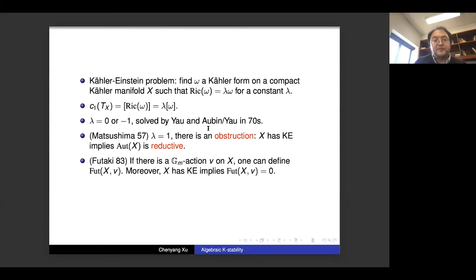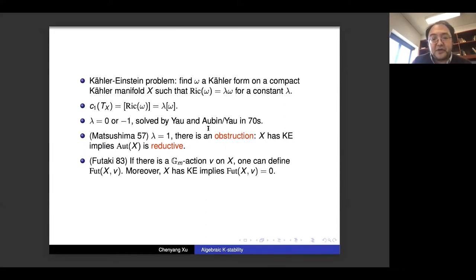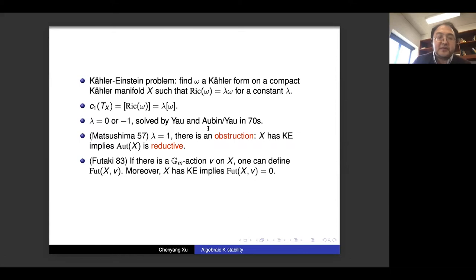Historically, people try to find canonical metrics, and one kind of canonical metric is the Kähler-Einstein metric. Basically, on a compact Kähler manifold X, people try to find the Kähler form satisfying the equation Ric(omega) = lambda * omega for some constant lambda. Looking at the cohomology class of this equation, the left-hand side is always in c1(TX) — the first Chern class — so c1 must be proportional to the class of a Kähler form, and one can rescale to make lambda equal to zero, negative one, or positive one.